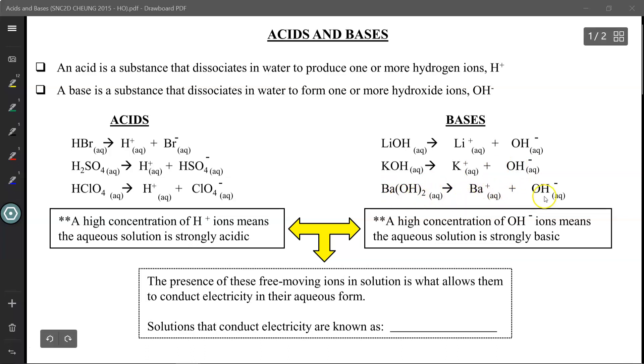Keep in mind that this last reaction is a skeleton equation - it is not balanced. In a balanced equation, the barium hydroxide would release one barium but two hydroxide ions. Just like acids, the more hydroxide ions floating around your solution, the more basic the solution is going to be.